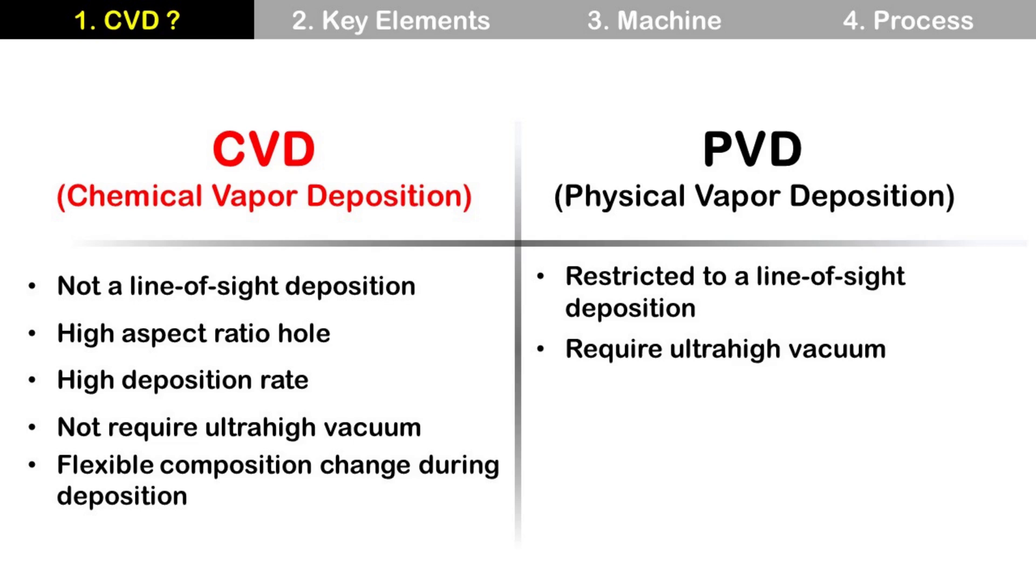CVD can deposit material on high-aspect ratio holes, and its deposition rate is high. It does not require ultra-high vacuum and can change material composition during deposition.